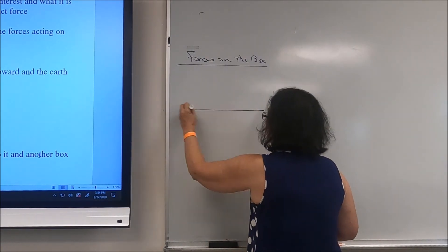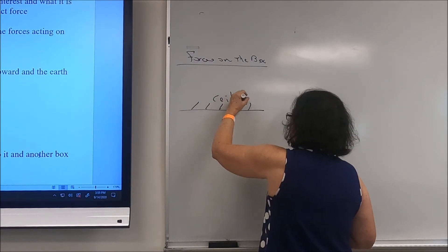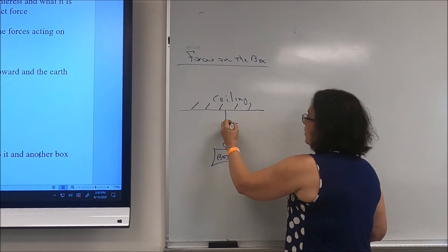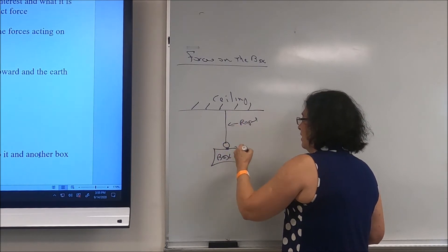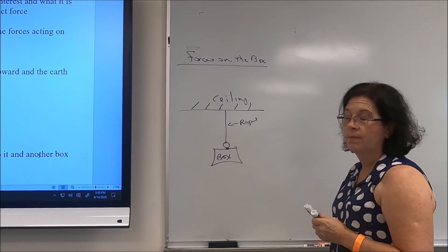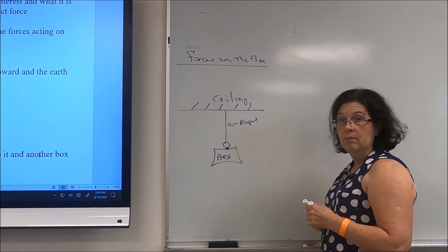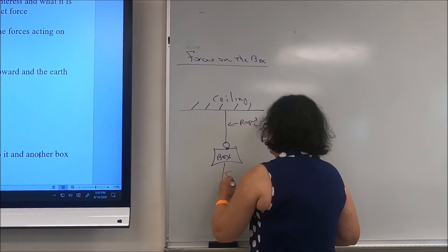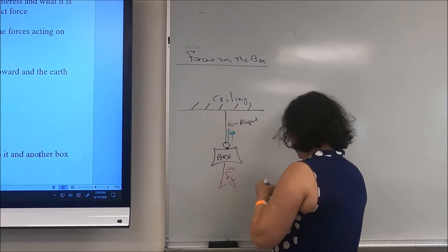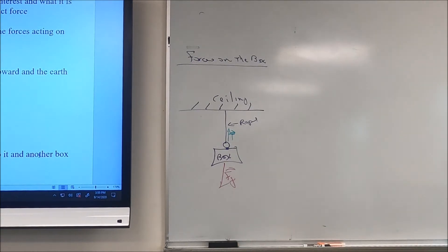Here's another example: a box with a rope tied to a ring attached to it. The forces acting on that box are the force due to gravity and a tension force. You should be able to look at any object and start identifying the forces acting on it.